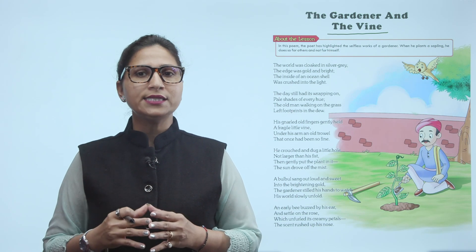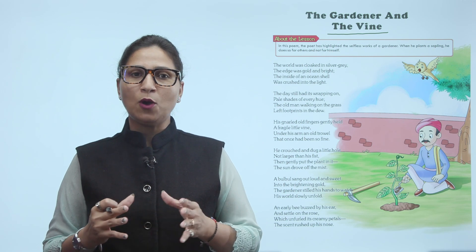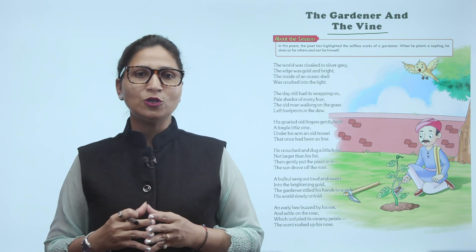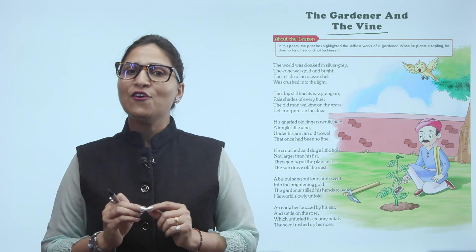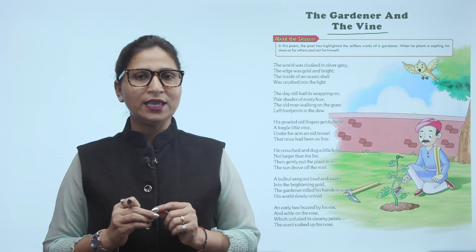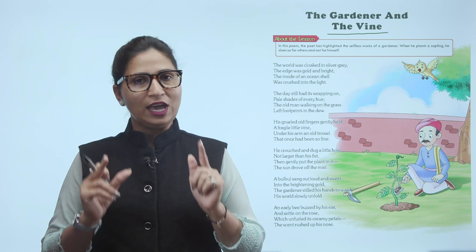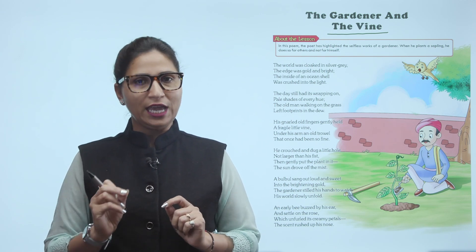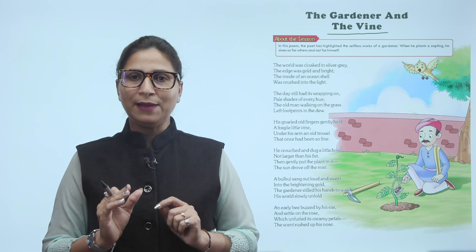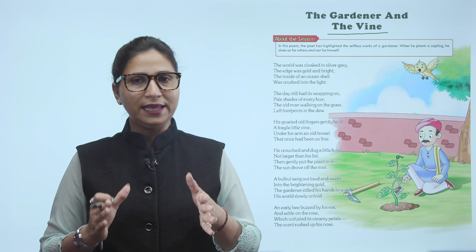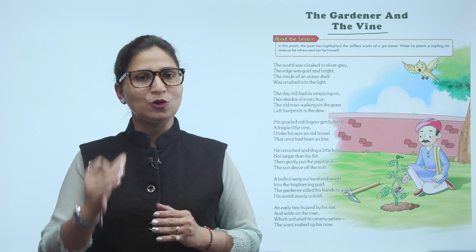When he plants a sapling, he does so for others and not for himself. Now what do you think about this poem? You are trying to highlight the meaning of vine. Vine means 'bail' — have you ever heard about this? It's like a vine. So here we are talking about the plants and sapling. So let's start the poem.